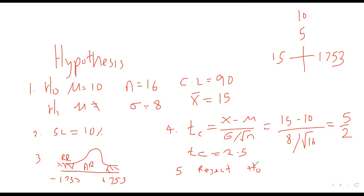The formula for T calculated is the same as Z: T equals X-bar minus mu, divided by standard deviation over root N. X-bar is 15, mu is 10, standard deviation is 8, N is 16. The difference is 5, the standard error is 8 over root 16 equals 2, so T calculated equals 5 divided by 2, which is 2.5. Since 2.5 falls in the shaded rejection region beyond 1.753, we reject H0 and conclude there is a significant difference between the two means at the 10% level of significance.